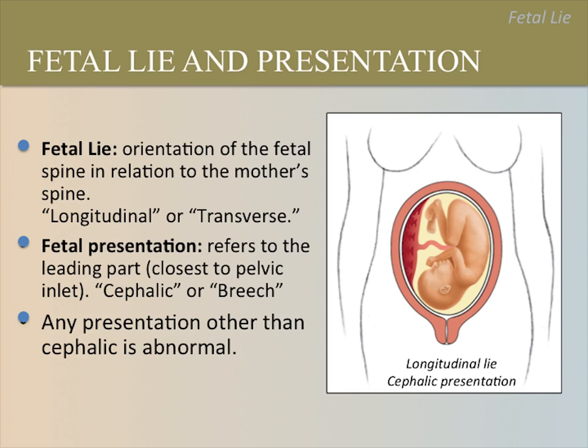A longitudinal lie, meaning the fetal spine is aligned with the maternal spine, can mean the baby is in either the cephalic or breech presentation. Another possibility is that the fetal lie is transverse, meaning the baby is in a sideways position with its head toward one of the maternal sides. Any presentation or lie other than cephalic is abnormal. A transverse fetal lie or breech presentation can complicate delivery. About 1 in 300 term pregnancies has a transverse fetal lie, and only about 3% to 4% of term pregnancies are breech.